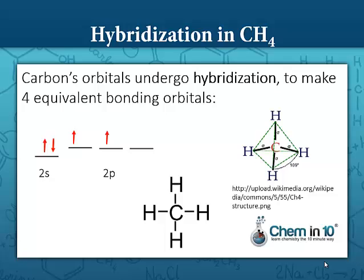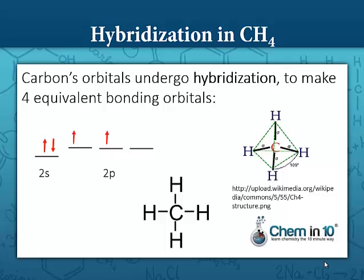So what happens is that instead of having a 2s and a 2p orbital, they combine and form hybrid sp3 orbitals. You've got one s orbital and three p orbitals — they hybridize together to form four sp3 orbitals. And you have one of carbon's electrons in each one.